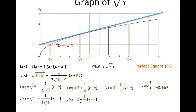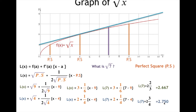L(x) = 2 + (1/4)(x − 4). Substituting x = 7: L(7) = 2 + (1/4)(7 − 4) = 2 + 3/4, which is estimated to be 2.750.